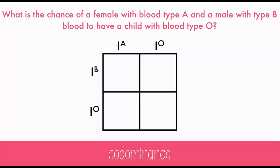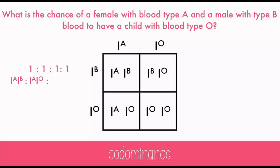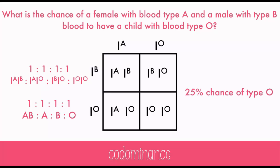Type A just needs one A allele and the other can be O. Similarly, type B needs just one B allele and the other can be O. When these cross, we find there's a 25% chance of type AB, a 25% chance of type B, a 25% chance of type A, and a 25% chance of type O.